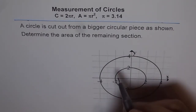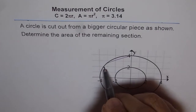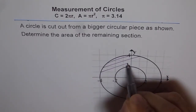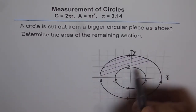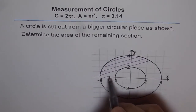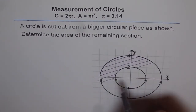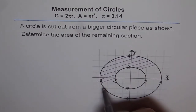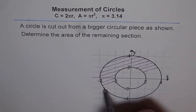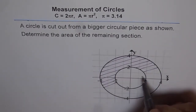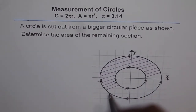First let me mark the remaining section. The remaining section is this one — I'm just shading it here. So that is the remaining section. Now it becomes very clear. Tell me, how will you find the area of this remaining section?